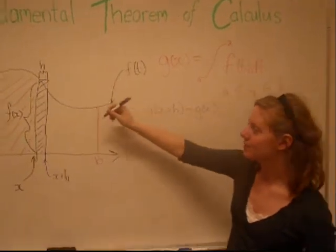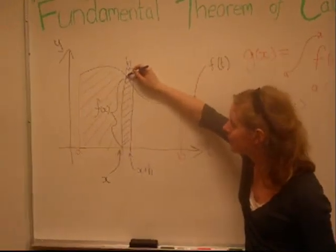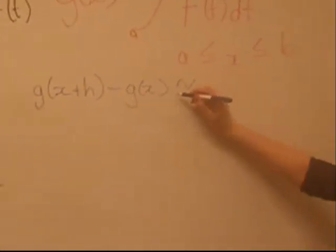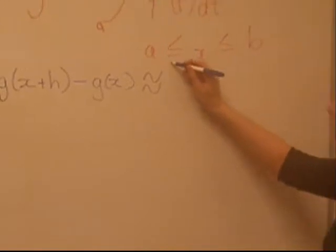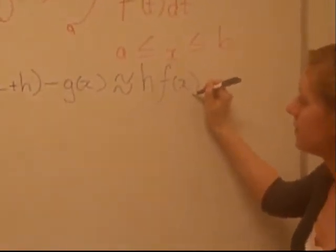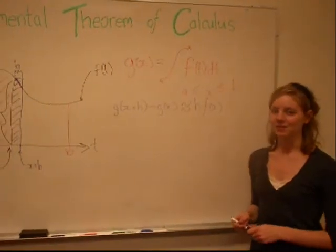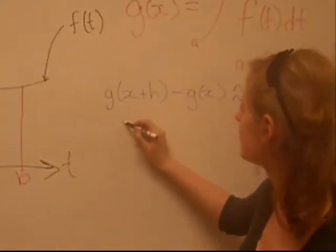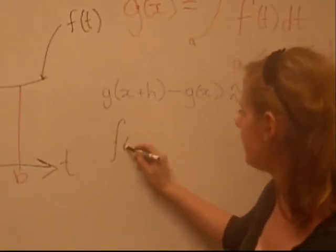However, this is only an approximate because you can see from here it's not a perfect rectangle. So, we write this is approximately h times f of x. And rearranging this expression to isolate f of x, we get f of x is approximately